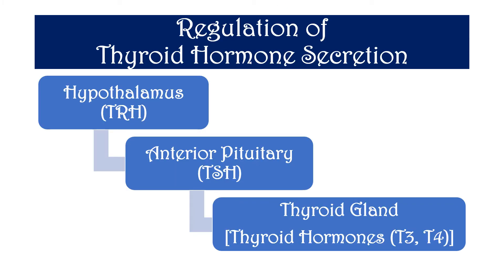These are the steps that regulate the secretion of thyroid hormones from the thyroid gland. First, TRH or the thyroid releasing hormone from the hypothalamus stimulates the anterior pituitary to secrete TSH or the thyroid stimulating hormone. This then stimulates the thyroid gland to secrete thyroid hormones T3 and T4.